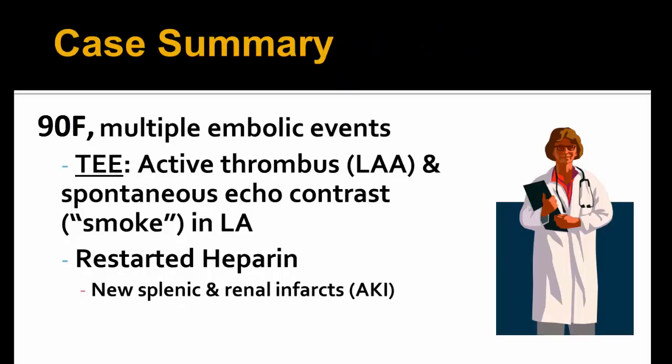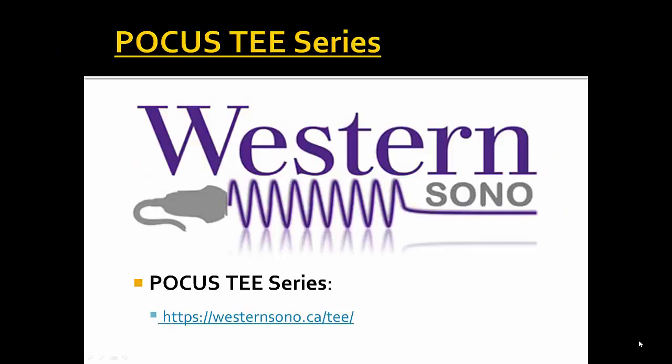In case summary, this unfortunate female with multiple embolic events was discovered to have an active thrombus on TEE with ongoing low flow state and smoke in the left atrial appendage. She was subsequently restarted on IV heparin due to new clots to her spleen and kidneys causing AKI. Thanks once again for joining us on the westernsano.ca website. Please check out the rest of the POCUS-TEE series or any other content posted on the website. We hope you join us again in the future — thank you very much and have a nice day.